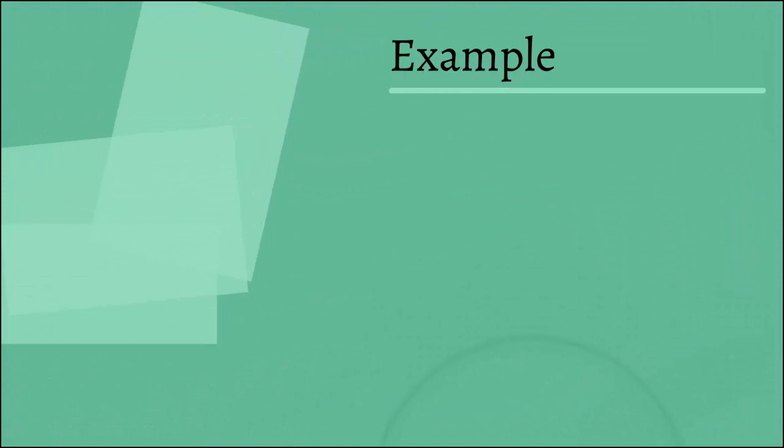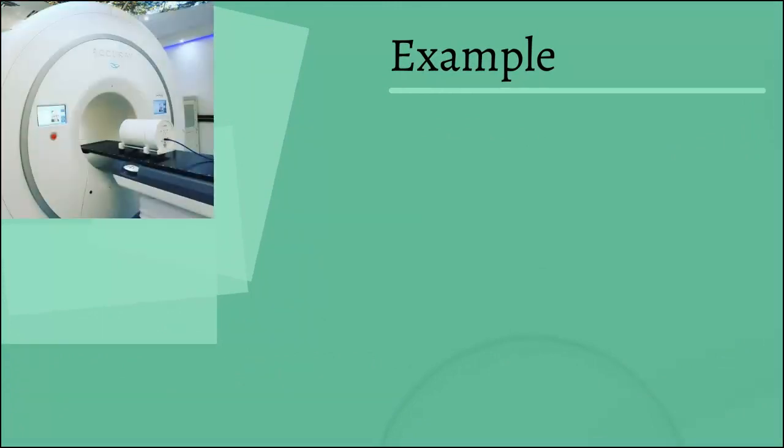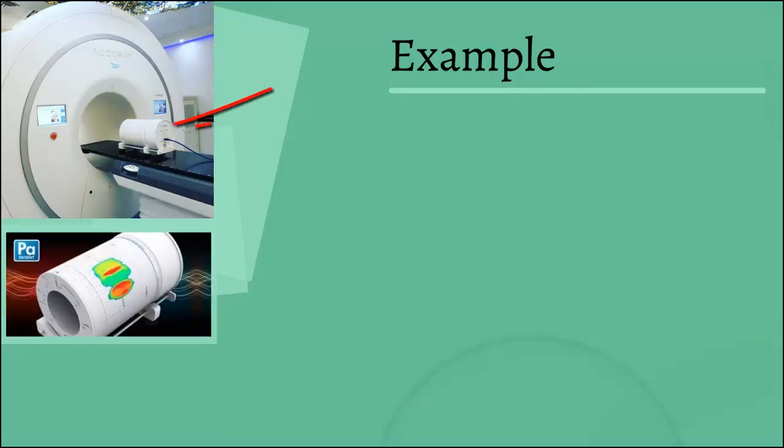Example. Let's give an example in the state center of cancerology. We have the tomotherapy equipment HDA, and we have the array of detectors ArchCheck, which has around 1,300 diodes that are located in a cylinder form.